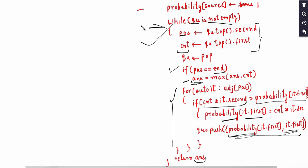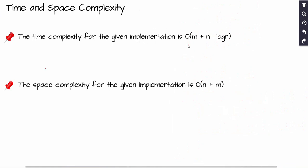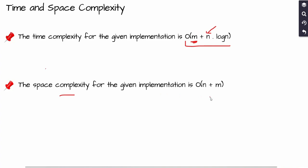Since this is essentially Dijkstra's algorithm, the time complexity is O((M + N) log N), where N is the number of nodes and M is the number of edges. The space complexity is O(N + M) due to the priority queue and adjacency list storage.